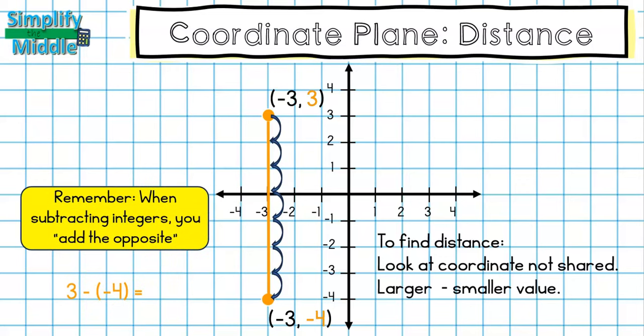Remember when you're subtracting integers, you're actually adding the opposite. We don't subtract integers, we just change it to add the opposite. So I'm going to keep the 3 the way it is, change this to addition. So it's 3 plus the opposite of -4 is positive 4, so it's actually 3 plus 4. So my answer is 7. I could confirm that from the picture and counting the distance of those units as well.